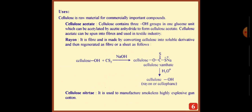Uses. Cellulose is raw material for commercially important compounds. First is cellulose acetate. Cellulose contains three OH groups in one glucose unit, which can be acetylated by acetic anhydride to form cellulose acetate. Cellulose acetate can be spun into fiber and used in textile industries. Rayon is a fiber made by converting cellulose into soluble derivative and then regenerated as fiber or a sheet as follows.